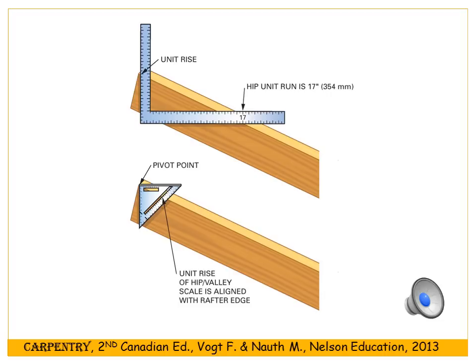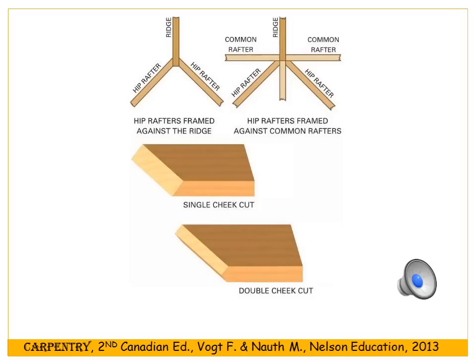On the long edge of the speed square you can read the actual degrees to set your miter saw for cutting the hip rafter. You will either have a single cheek cut or a double cheek cut. In most cases we go with the double cheek cut because we're building tripod hip roofs with three common rafters at the end of the ridge board and the hip rafter fitting in between each pair.